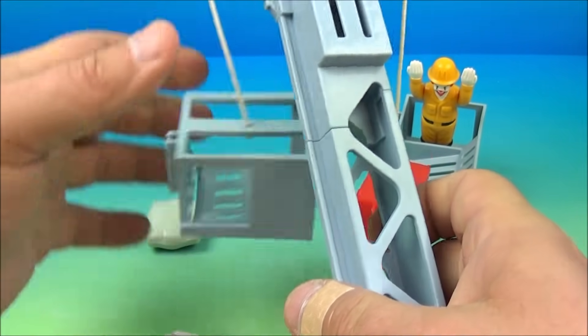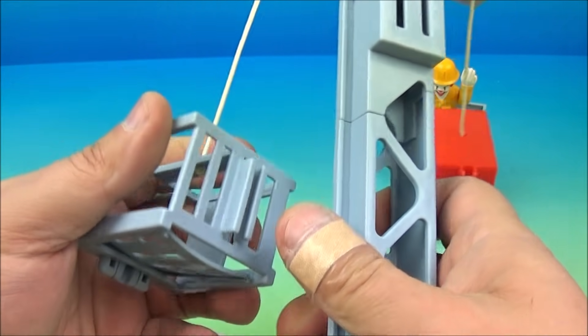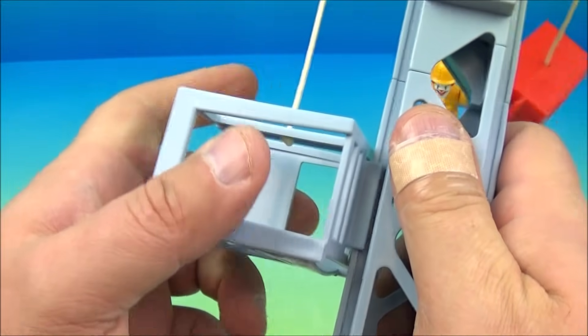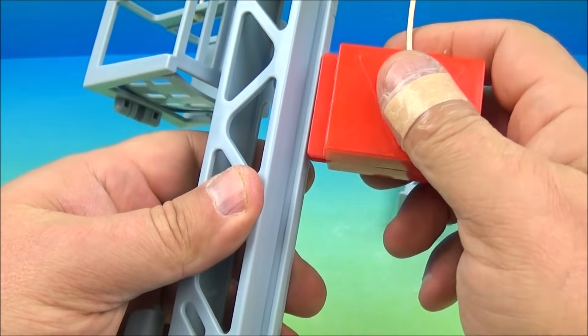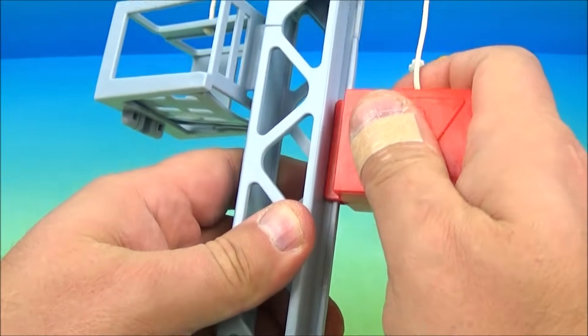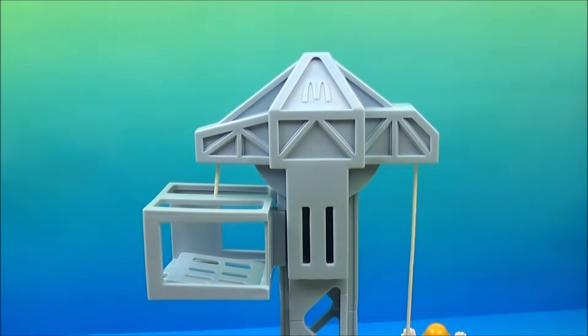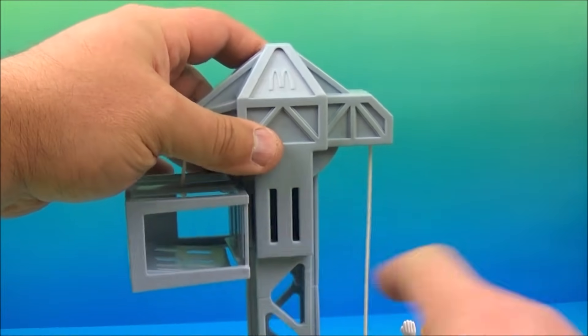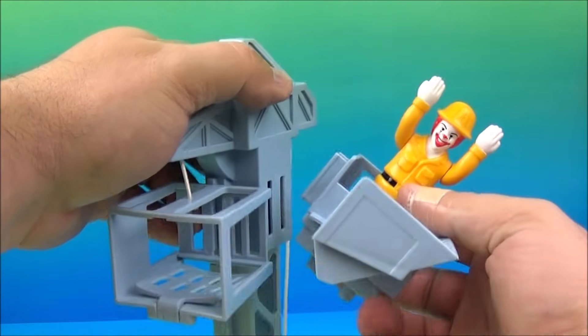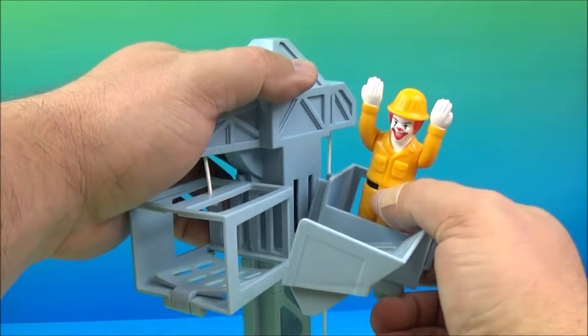You snap them on and then you grab this piece with the string here and put it here and this one which is weighted goes here. So you see these slots right here? That's where Ronald goes. So you place Ronald in these slots right here. You tab them in and look at that.